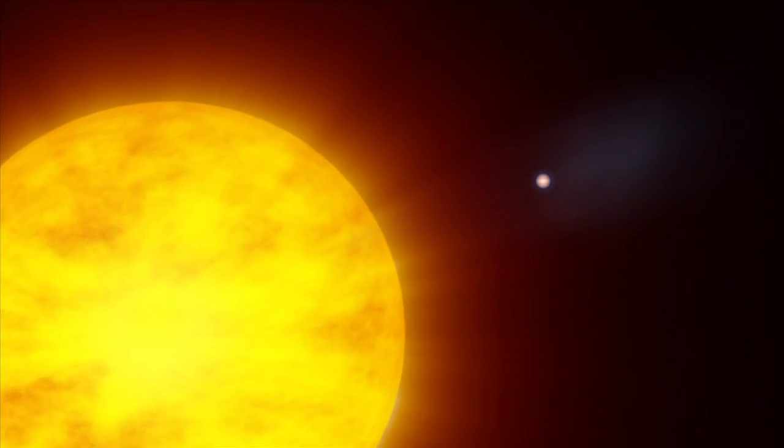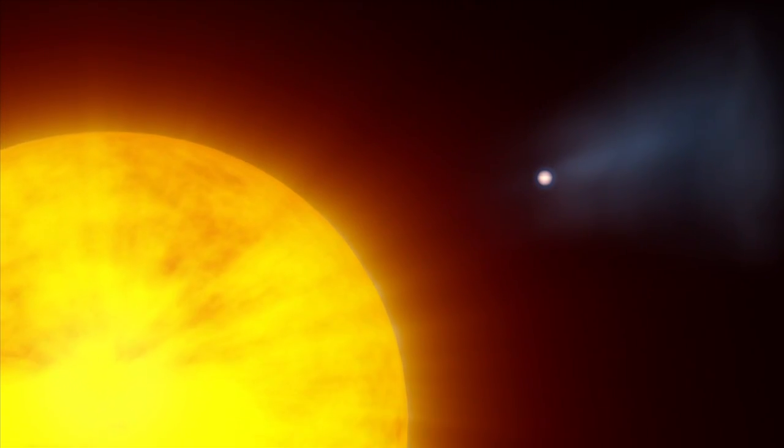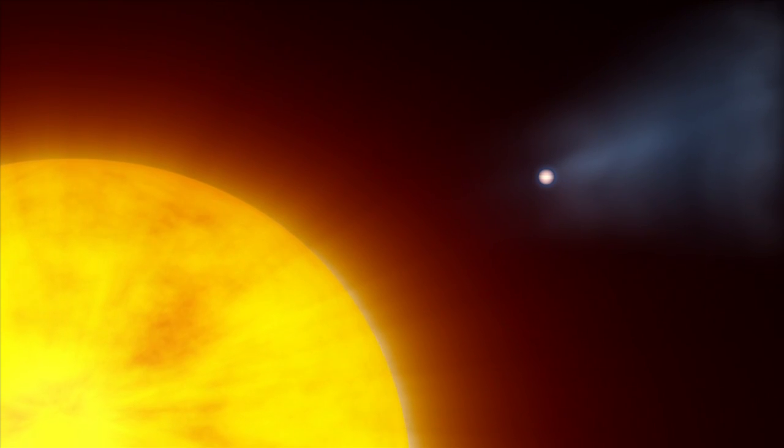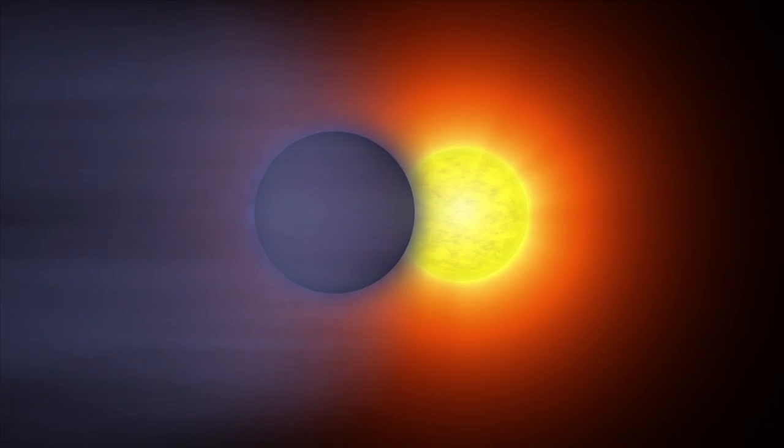While HD 189733b has plenty of gas to spare, atmospheric erosion is an important process, one able to whittle down any gas giant planet that hugs its star too close.